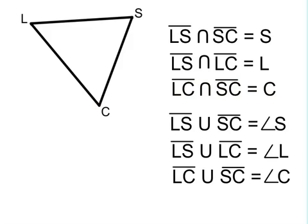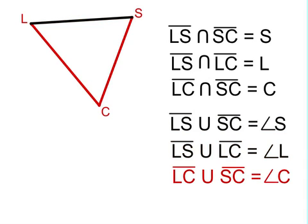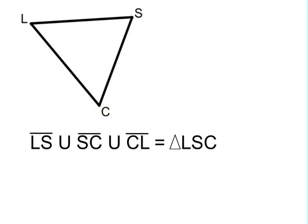So the intersection of any pair of sides of a triangle is a vertex of the triangle. Now here are three sentences about the union of sides of the triangle. The union of side LS and side SC is the entire angle S. The union of side LS with side LC is angle L. The union of side LC with side SC is angle C. And the union of all three segments — LS, SC, and CL — gives us the entire triangle LSC.